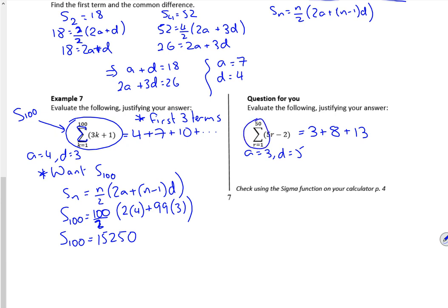I want the sum of the first 50, sum to 50. So that would be 50 over 2, 2 lots of 3, 49 lots of 5. Sum to 50, here it is, 6275. You can actually do it on the calculator straight off, but I'll let you do that to check it.